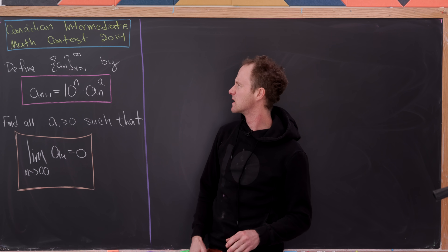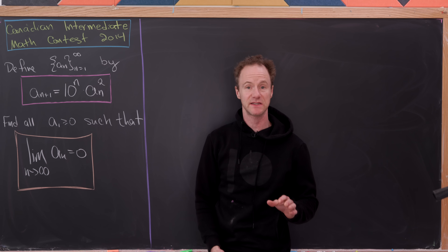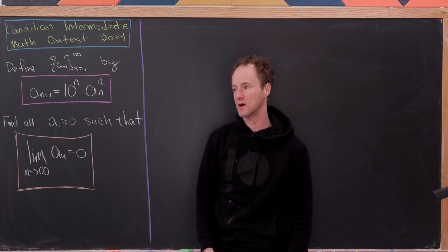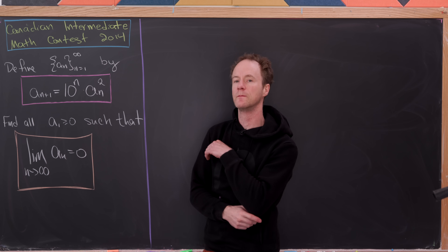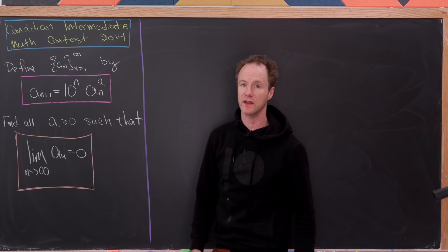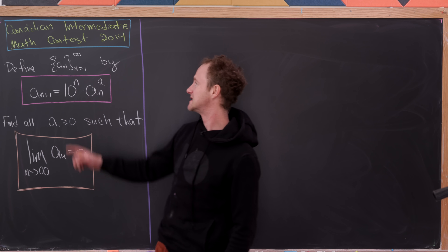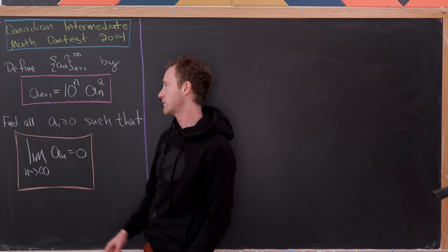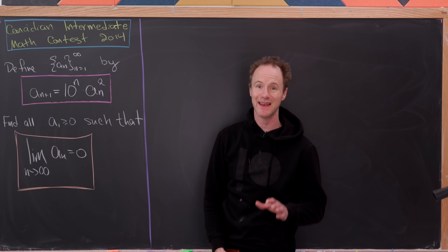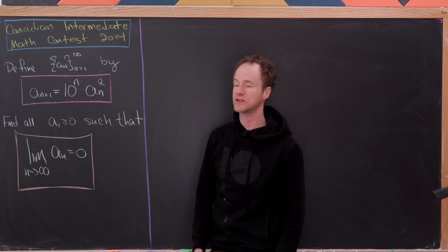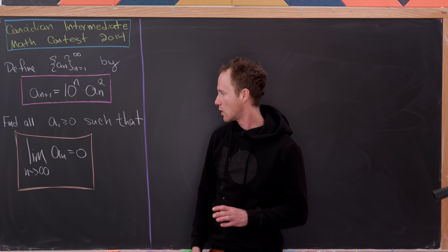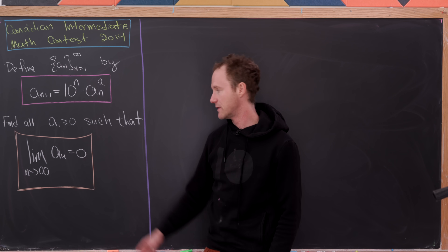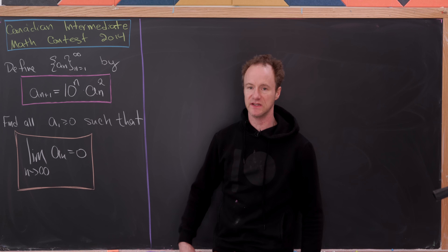Today we're going to look at a nice problem that was on the Canadian Intermediate Math Contest in 2014, which I believe is based out of the University of Waterloo. We want to define a sequence of real numbers by the recursion: a_{n+1} = 10^n · a_n². Our goal is to determine all seeds a_1 so that the limit of this sequence is equal to zero.